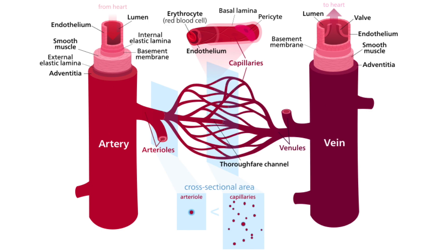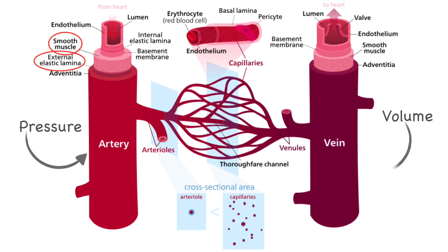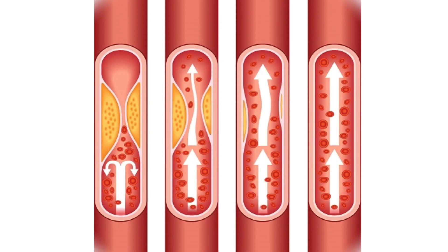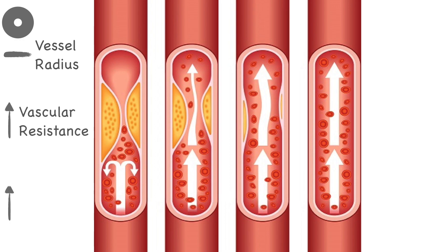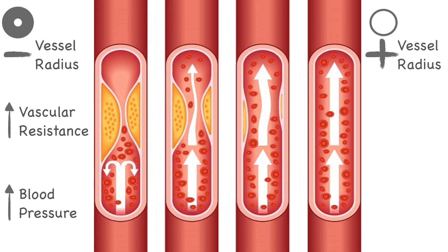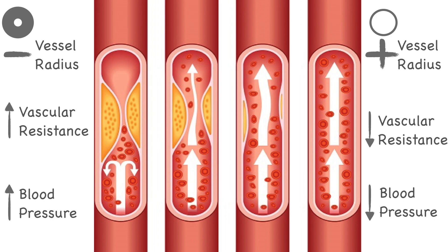Let's take a look at this example of arteries and veins. Because of their composition, arteries are made to handle pressure. The tunica media, which is made up of smooth muscle and elastic tissue, gives arteries the capability to reduce or increase their diameter depending on the body's needs. Veins, on the other hand, are equipped to handle volume. The vessel with a smaller radius increases vascular resistance and in turn increases blood pressure, similar to vasoconstriction. The vessel with a bigger radius decreases vascular resistance, decreasing blood pressure, similar to vasodilation.